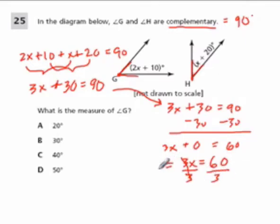And we get X equals 60 divided by 3, which is 20. So don't be tempted here to circle 20 degrees, because they want to know the measure of G, angle G. And angle G is not just X.